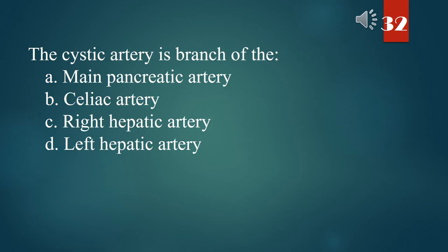The cystic artery is a branch of the: A. Main pancreatic artery. B. Celiac artery. C. Right hepatic artery. D. Left hepatic artery. The answer is C. Right hepatic artery.